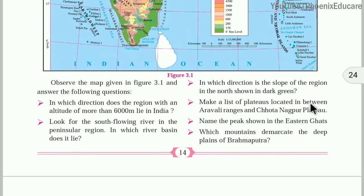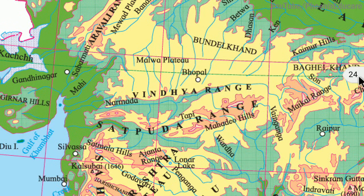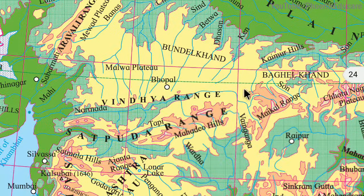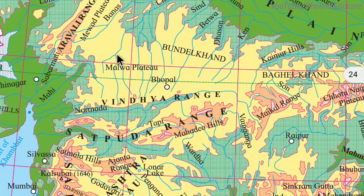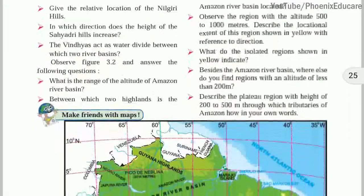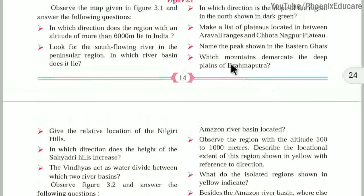The next question: make a list of plateaus located between Aravali Ranges and Chhota Nagpur. Between the Aravali Ranges and Chhota Nagpur Plateau, we have three plateaus: the Malwa Plateau, Bundelkhand Plateau, and Baghelkhand Plateau.